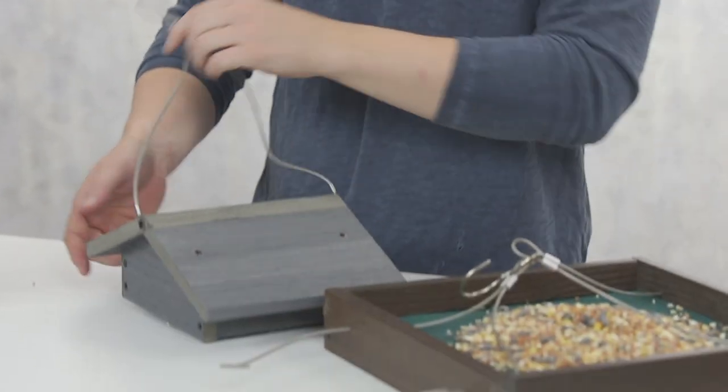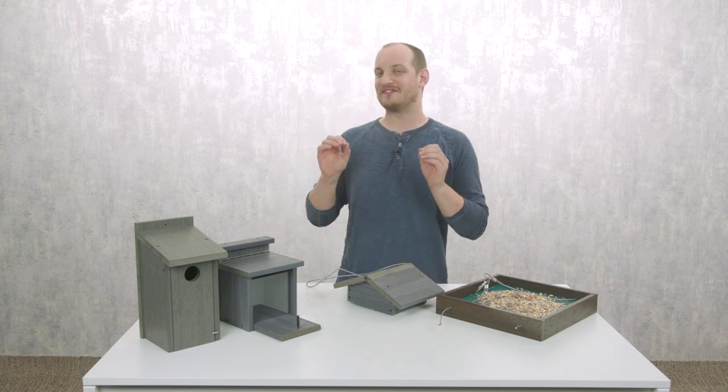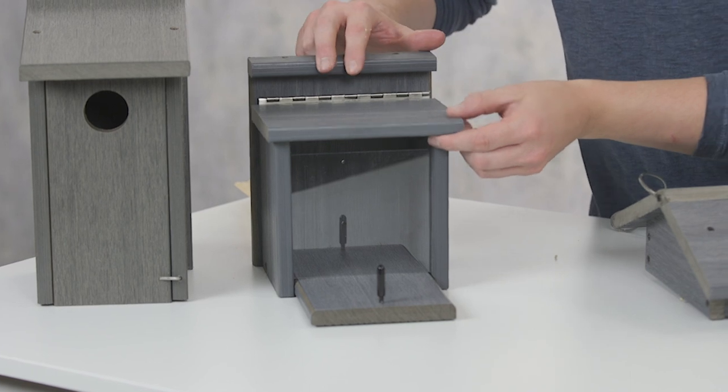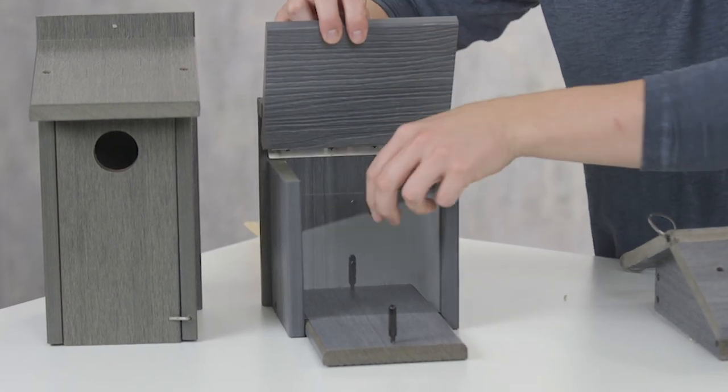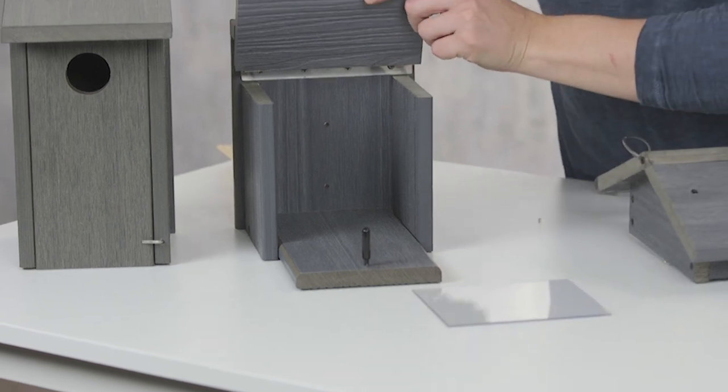All right, so on to the squirrel feeder. This is another very simple mounting system. Just to check it out, we're going to open this hatch, remove the plexiglass window, and you can see right there the two mounting screw holes.